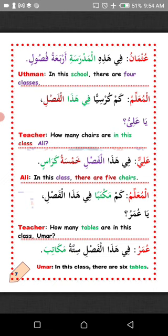Al-muallim — Teacher: Kam maktaban fi hadha al-fasil, ya Umar? How many tables are there in this classroom? Answer: Fi hadha al-fasil sittatu makaatibin — there are six tables. Maktab is mudhakkar, that is why we have sittatu, not sittu. I hope you understand. MashaAllah.